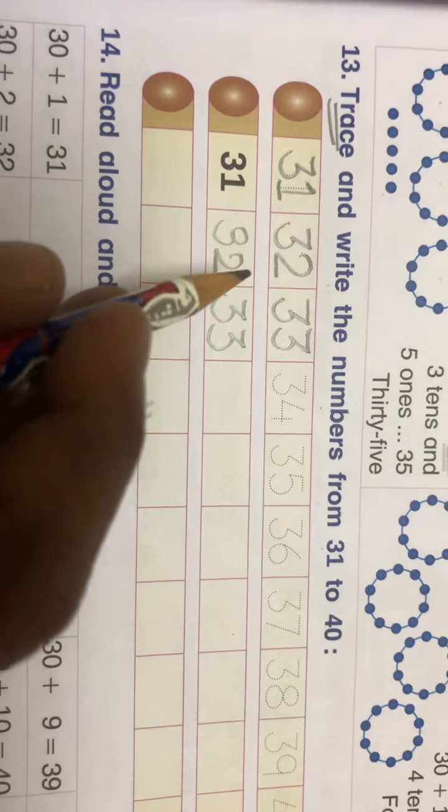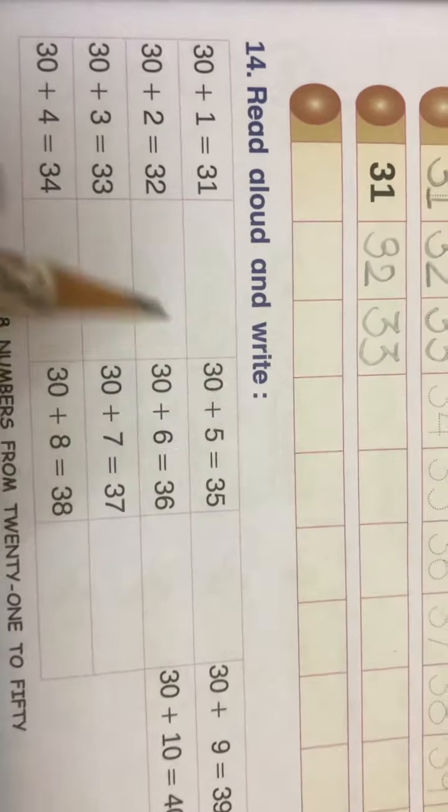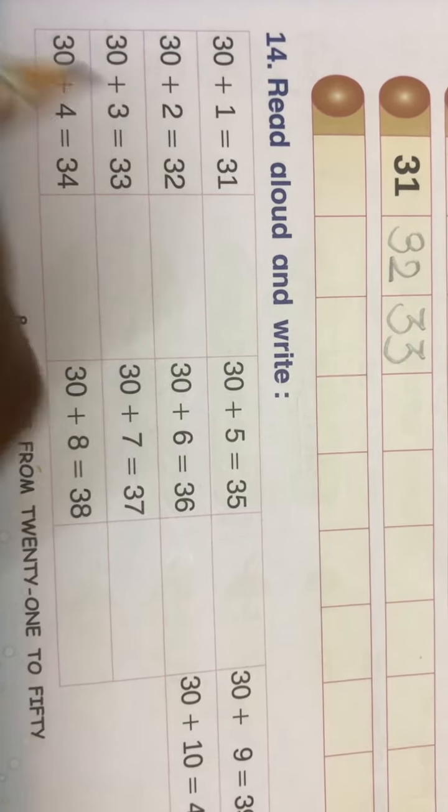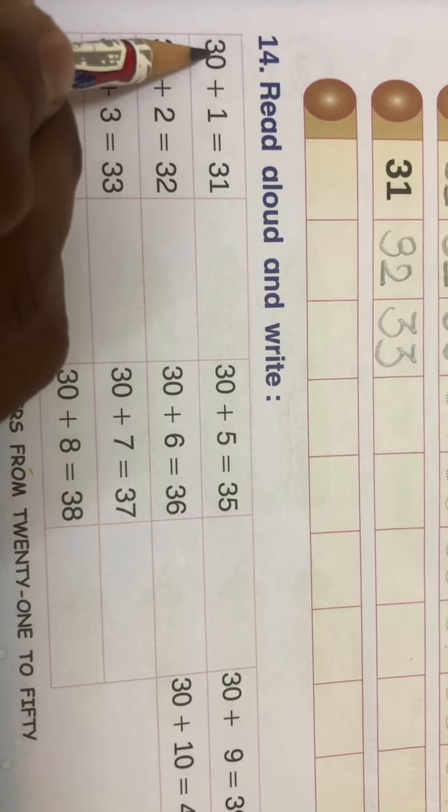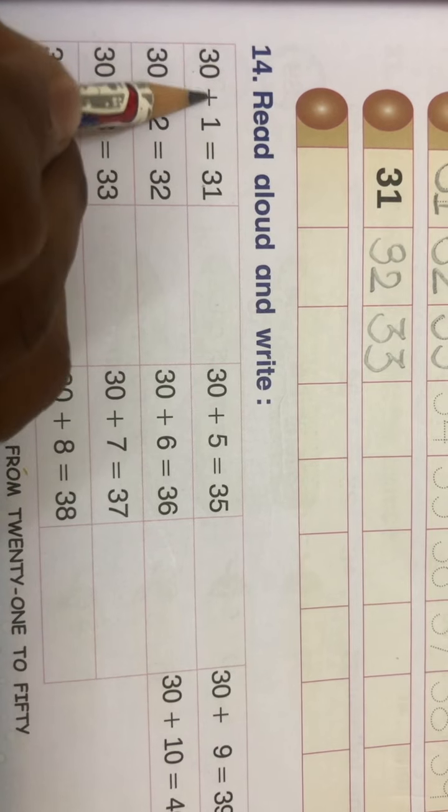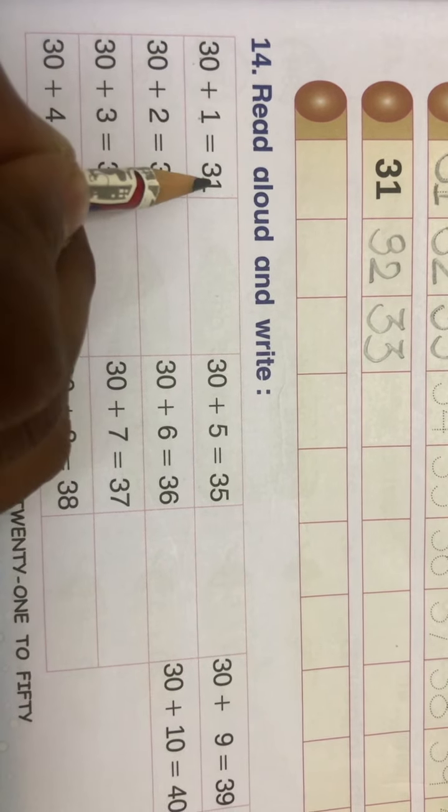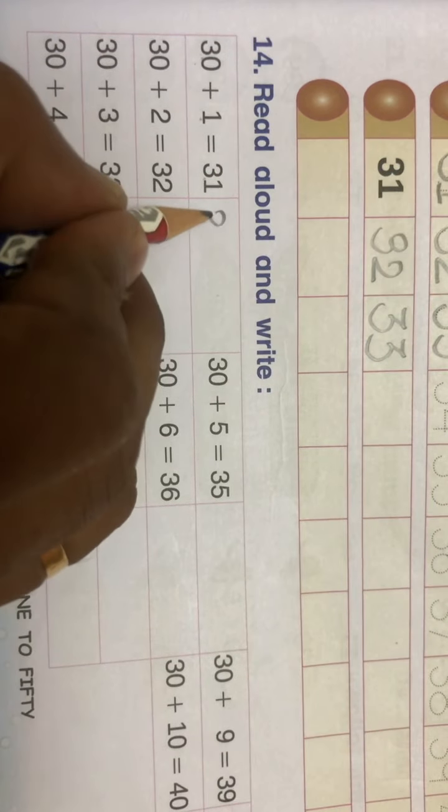Read aloud and write. Now see the next one - same thing you have to do here. Read aloud and write. Thirty plus one means three tenths plus one ones is equal to thirty-one. So write thirty